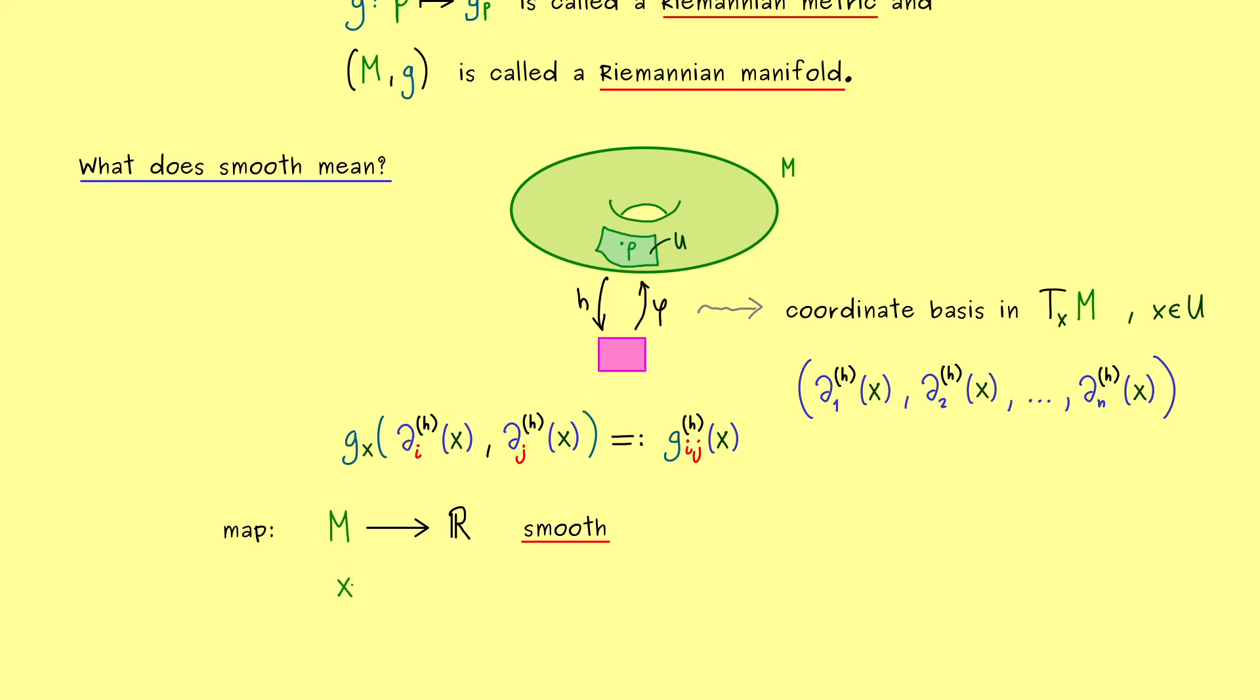We want that this map that sends x to the number g_ij is a smooth one, no matter which i,j we consider. Now, to be precise, we should say that this map is only defined on the set U. However, this is not a big difference, because we would just say that all the maps for all the charts H are smooth. So this is what we want here. All these maps here should be smooth in the sense of manifolds. Or you could make it even more concrete and you could say, after going to the lower level here we have differentiable maps from R^n into R. But that's something you already know by the definition of smooth maps between manifolds. With this I would say we have understood the definition of a Riemannian manifold.